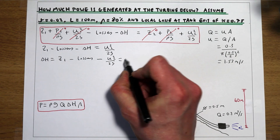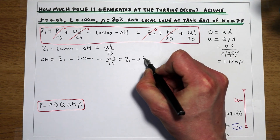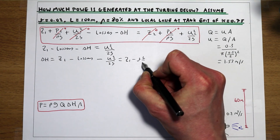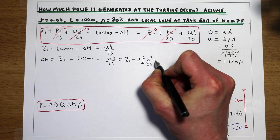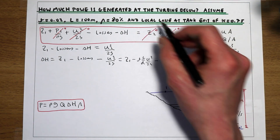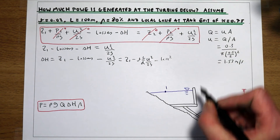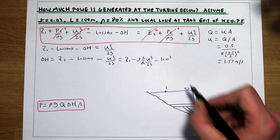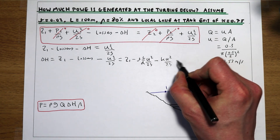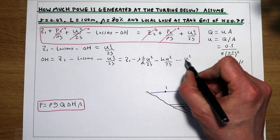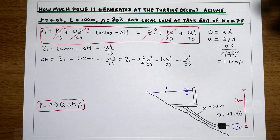Thinking about what our losses are going to be in this system: we're going to have losses due to friction — F times L over D, times U squared over 2G. We're also told in the question that we have a local loss at the exit from the tank, which will be K times U squared over 2G, and then we'll have a final U squared over 2G term on the end of that equation.